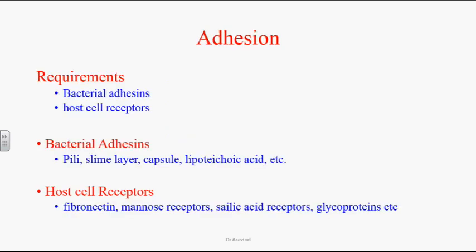Next is adhesion — how bacteria attach to host tissues. It requires two things: bacterial adhesins and specific host cell receptors. Some bacterial adhesins that help in attaching bacteria to the host cells are pili, slime layer, capsule, lipoteichoic acids, and endotoxins. These must interact with specific receptors on the host cell surface. Those host cell surface receptors include fibronectin, mannose receptors, sialic acid receptors, and glycoproteins, which help in attaching to the bacterial adhesins.